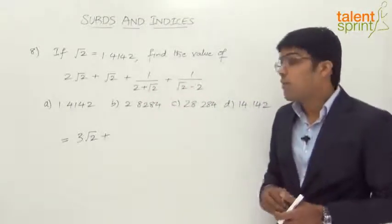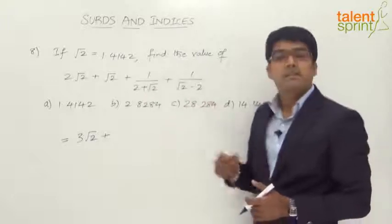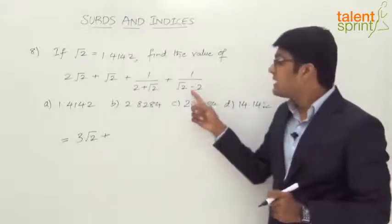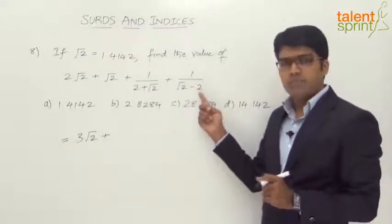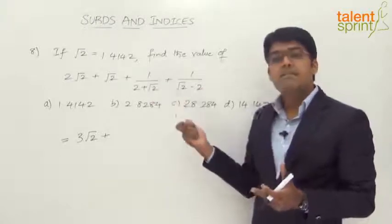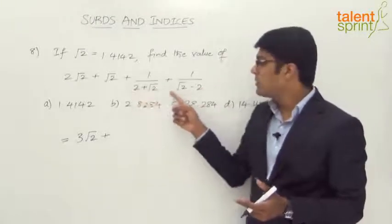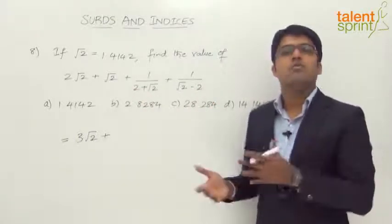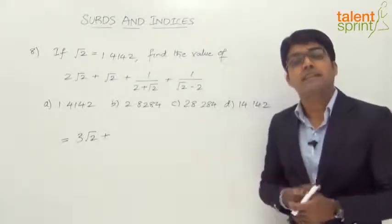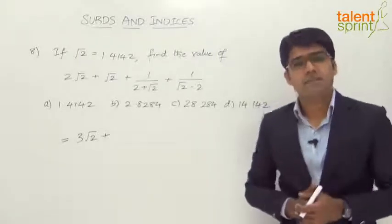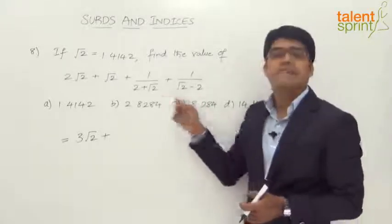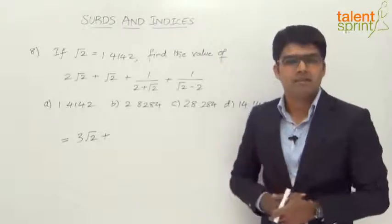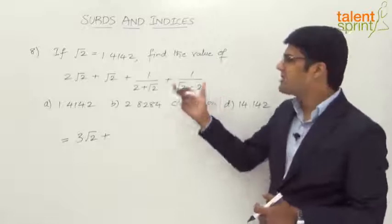The reason for using LCM: one denominator is 2 + √2 and the other is √2 − 2, which are in the form of (a + b) and (a − b). When we take the LCM, we get (√2 + 2)(√2 − 2), which is in the form (a + b)(a − b) = a² − b². This eliminates the radical, since squaring removes the square root sign. So either rationalize independently or take the LCM.